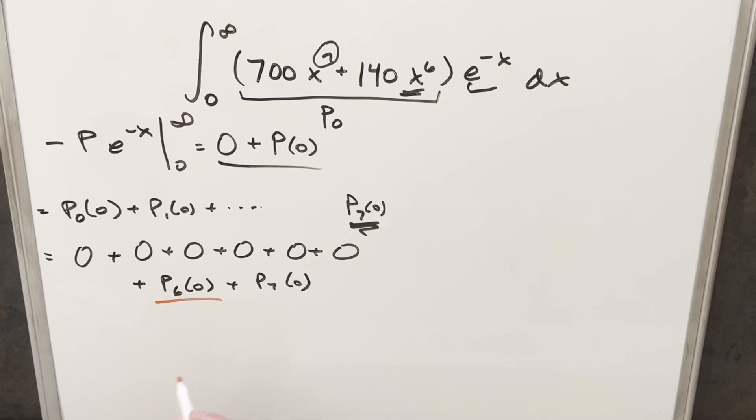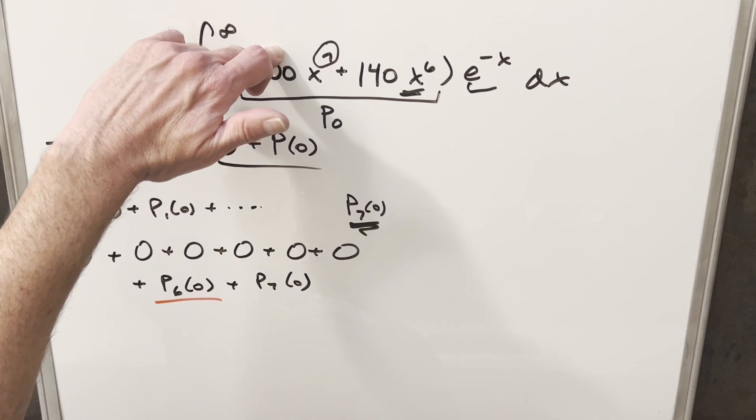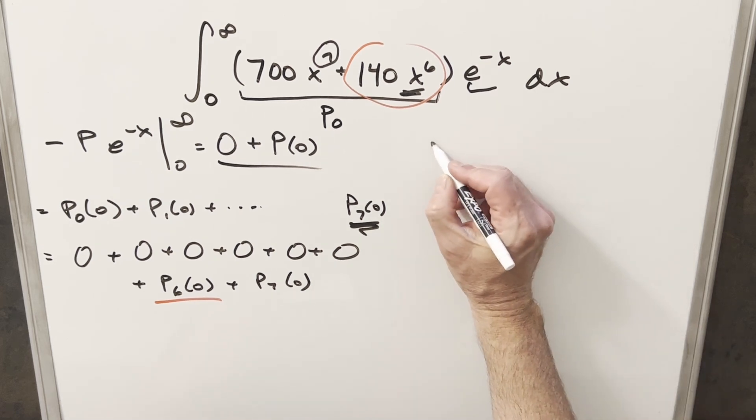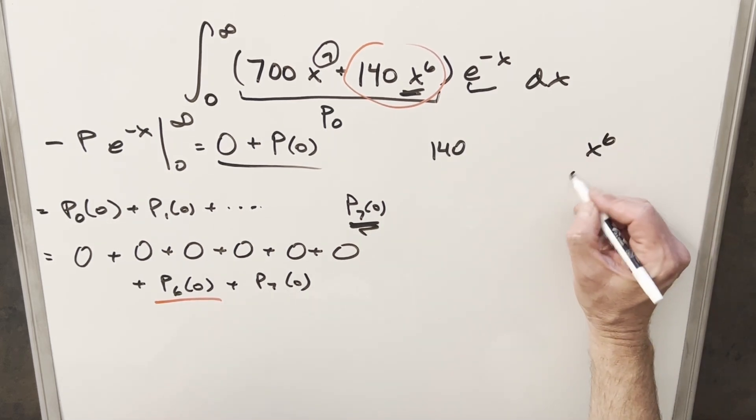Well, now just looking at this P₆(0), what's going to happen is for 6 derivatives, this first term is still going to have an x in it. So this term is going to zero out. We're not worried about that. We just want to know what's going to happen to this 140x^6. Well, for that, what's going to happen is you'll just notice, like if you start out with x^6 and you differentiate,